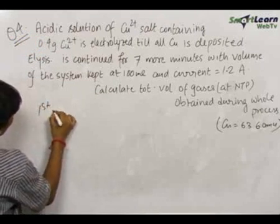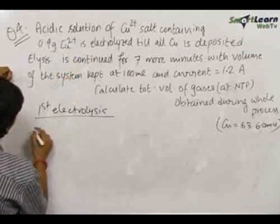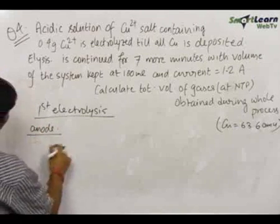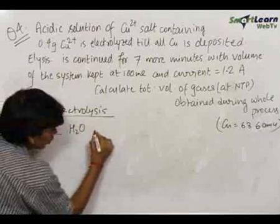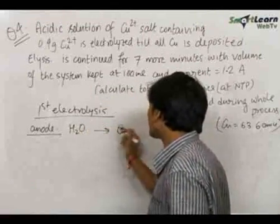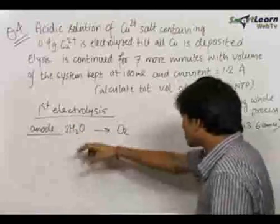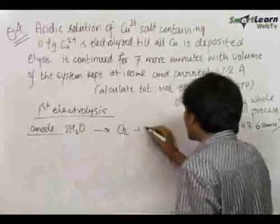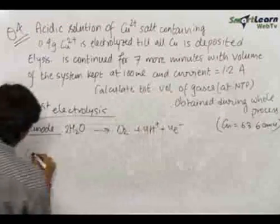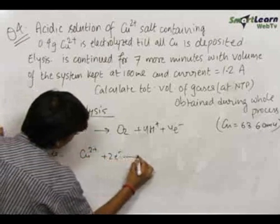In the first electrolysis, when Cu²⁺ ions were present, Cu²⁺ ions undergo reduction at the cathode. At the anode, oxidation of water takes place — water goes to oxygen gas, where the oxidation number of oxygen changes from -2 to 0. Balancing this reaction: we take one more molecule of water, add 4H⁺, and 4 electrons. The cathode reaction is Cu²⁺ + 2e⁻ → Cu.